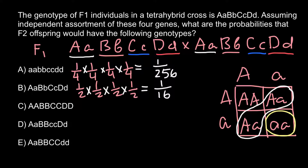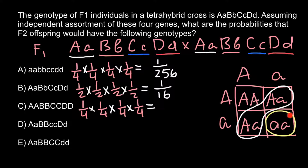What is the probability of this genotype in the progeny? It is one quarter for each allelic pair — one quarter, one quarter, and one quarter. Using the product rule, the answer is the same as in the first example. Just as we had one quarter probability for homozygous recessive, we have the same one quarter probability for homozygous dominant. So the answer is also one over 256.